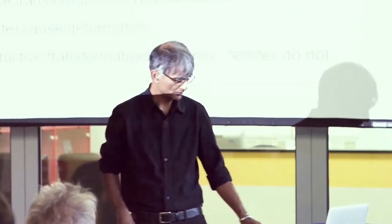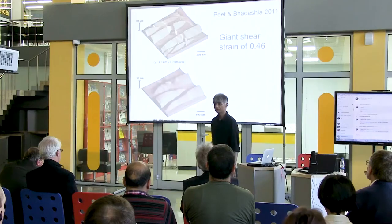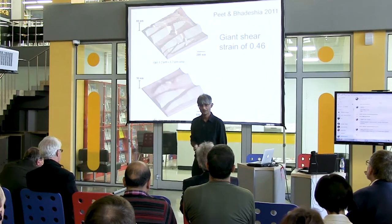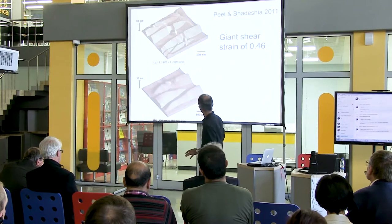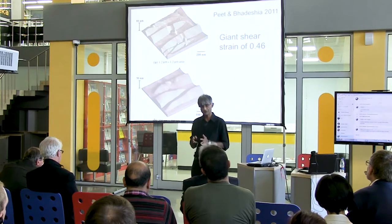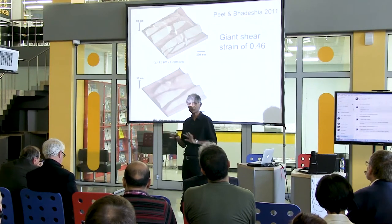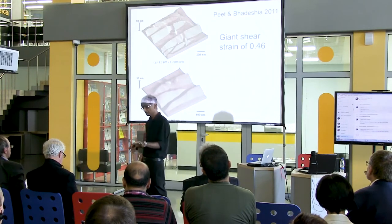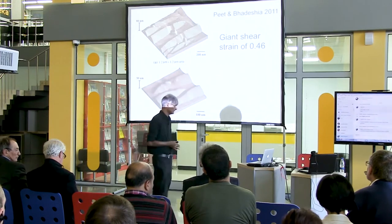We can measure this accurately using an atomic force microscope. The shear strain is of the order of 0.46. A typical elastic strain is 10 to the power of minus 3. So this is a very large amount of strain, which causes the transformation product to be extremely fine without any deformation at all. You can produce a very fine grain structure — no deformation needed, no rapid cooling needed.